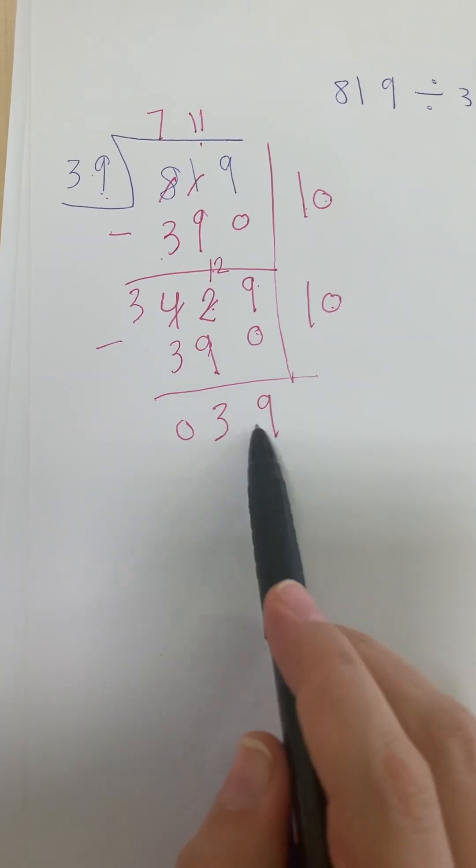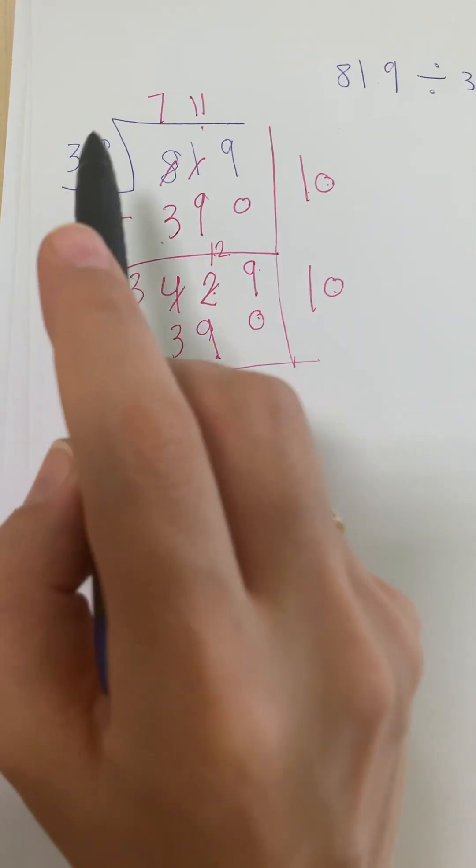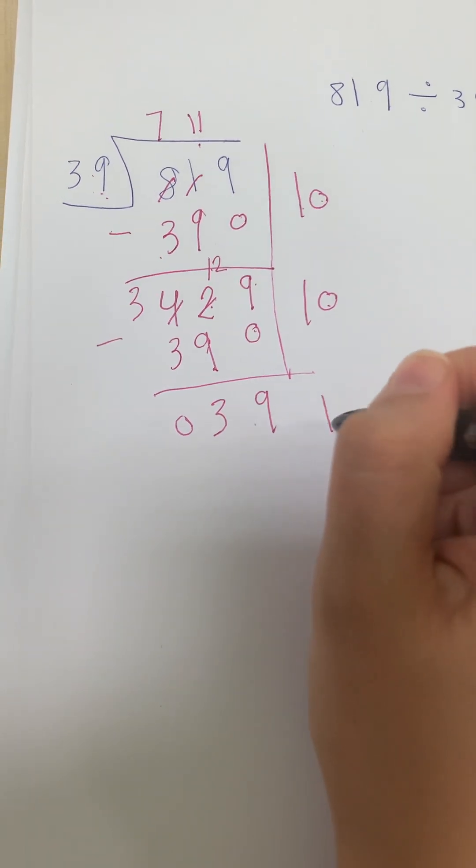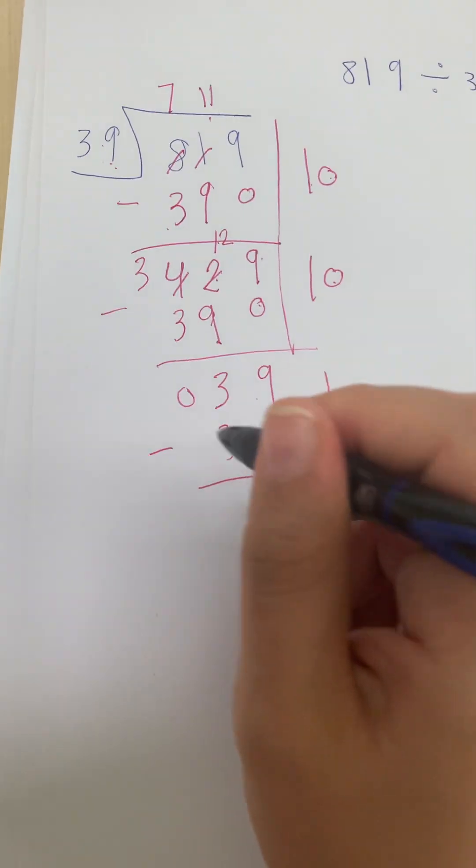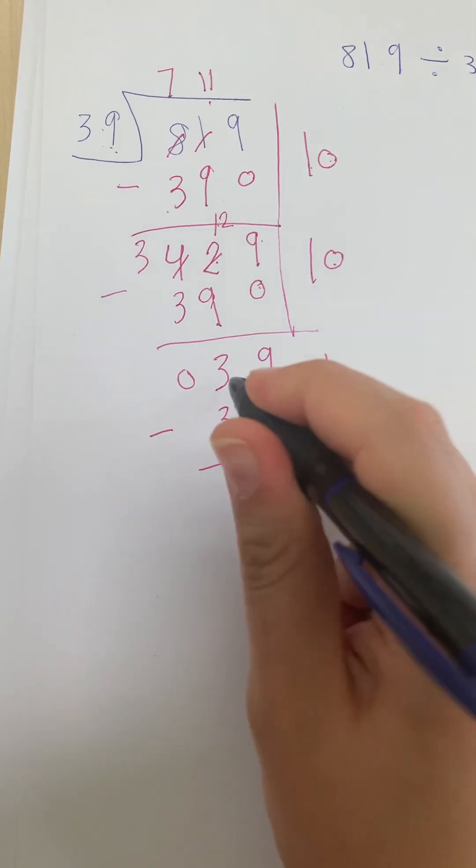How many 39s are there in 39? One. 1 times 39 is 39. Subtract: 9 minus 9 is 0, 3 minus 3 is 0.